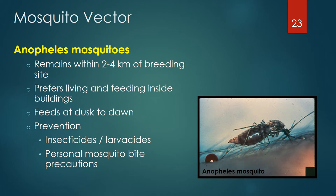Malaria is only transmitted by Anopheles mosquitoes. These mosquitoes generally remain within 2 to 4 kilometers of their breeding sites. They like to live and feed inside buildings, primarily during dusk to dawn — factors that enhance malaria transmission to humans. Prevention includes controlling the mosquito vector by use of insecticides and larvicides and practicing personal mosquito bite precautions. It's not easy to eliminate all mosquitoes within 4 kilometers of human dwellings, emphasizing the importance of personal mosquito bite precautions.